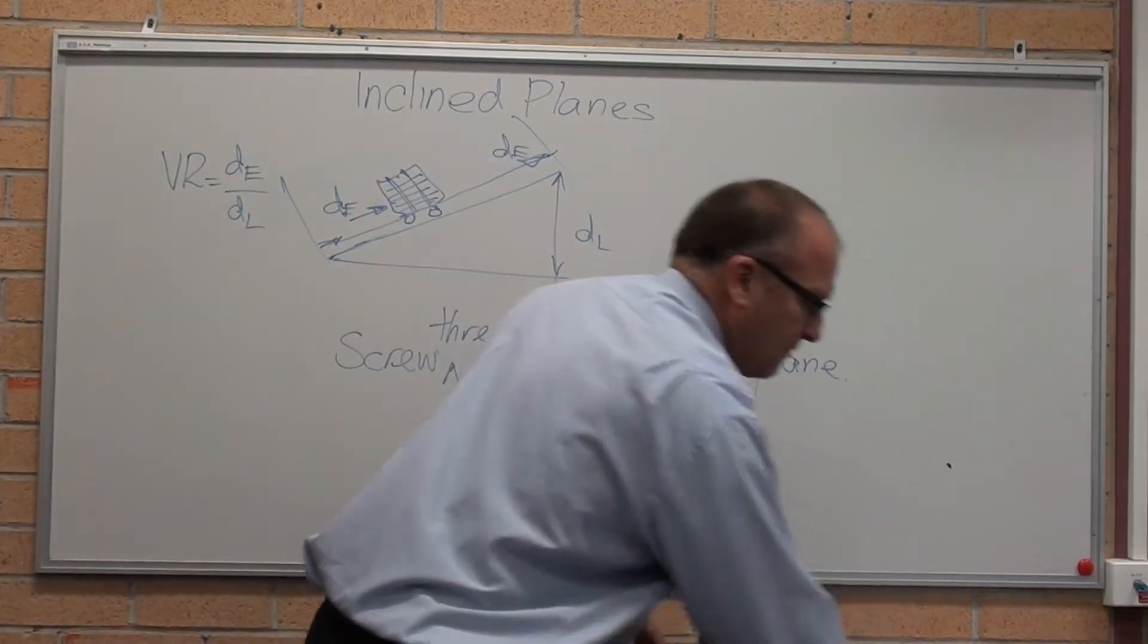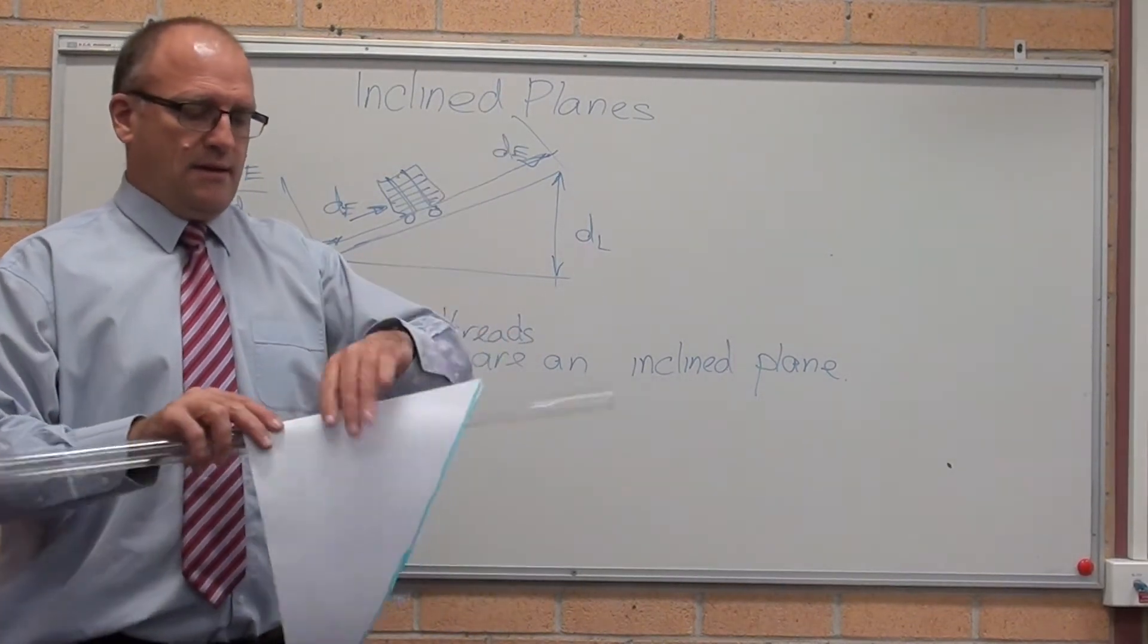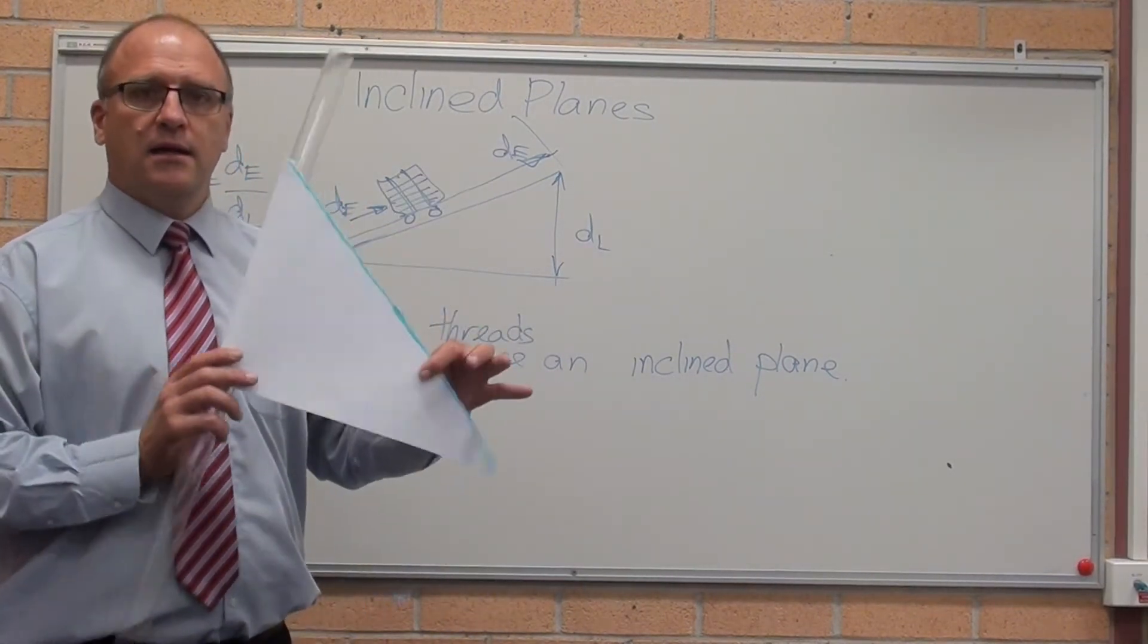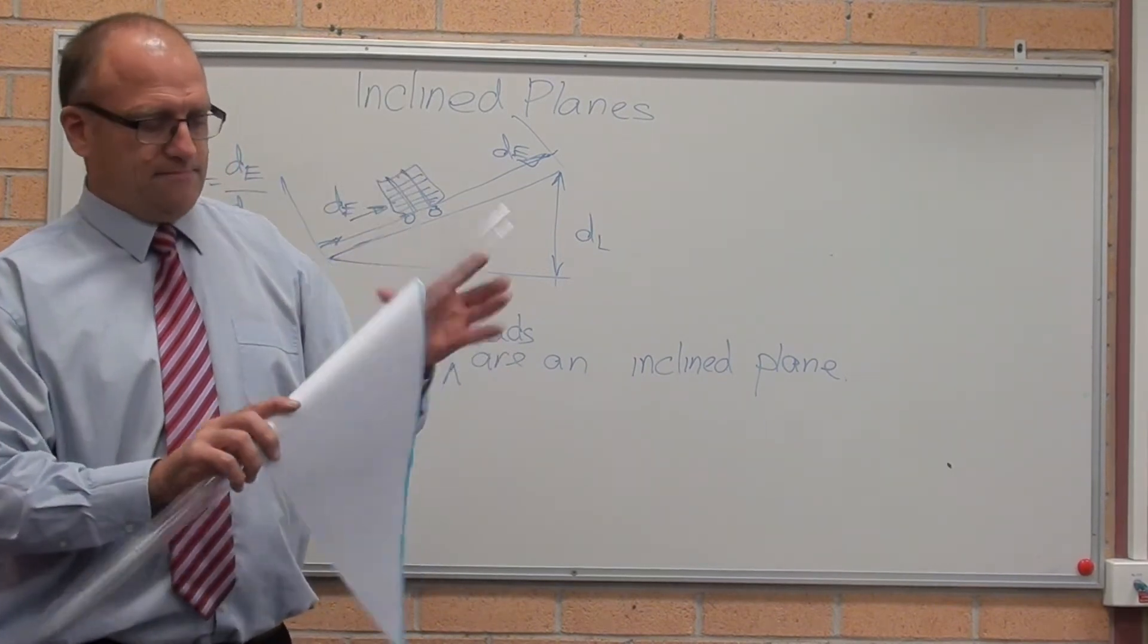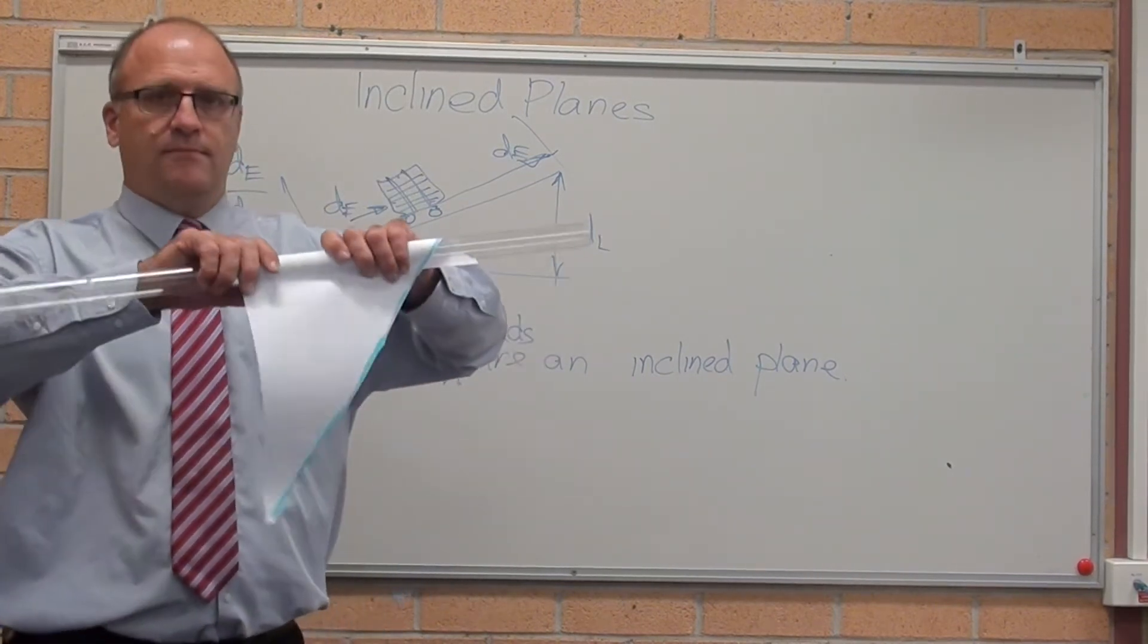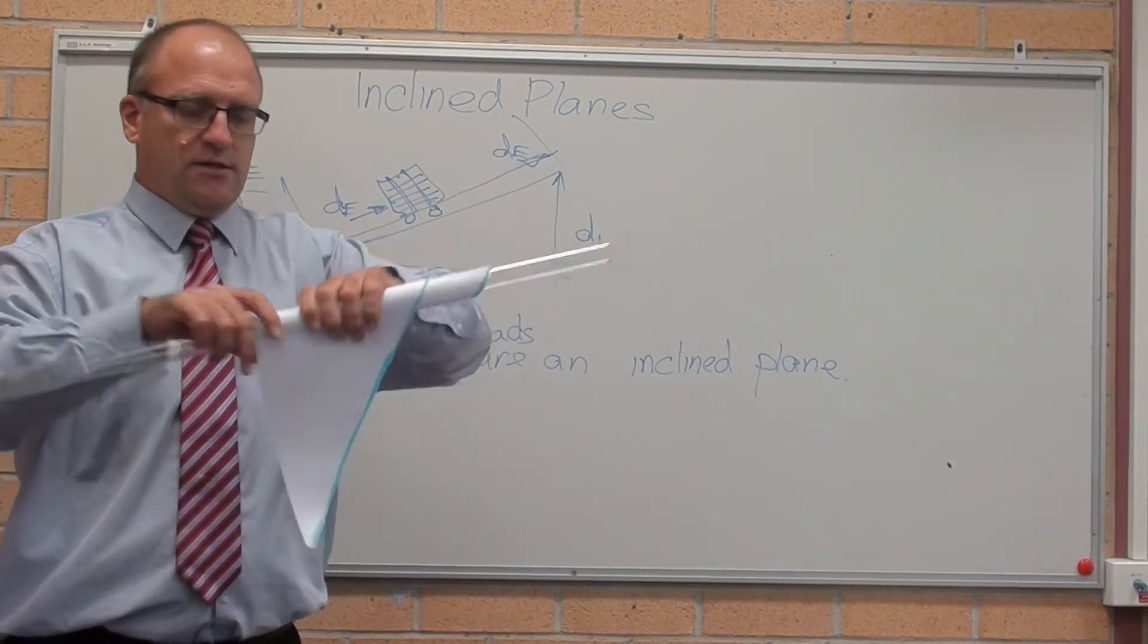Screw threads are a type of inclined plane. Here's a round tube and an inclined plane. If I just roll that up, see if I can roll it up, there it goes.